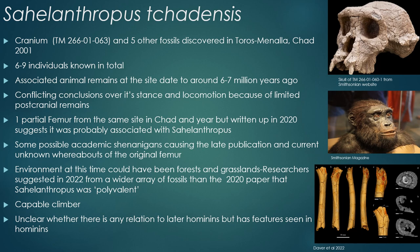Whether that was actually true I'm not sure, but things in archaeology do sometimes just not get published for years. We now have the femur and it has been well written about. Researchers in 2022 suggested that Sahelanthropus was polyvalent — it could probably walk both on the ground and was also arboreal, making it quite a capable climber. Its environment may have been forested with grassland. It's unclear whether there is any relation to later hominins, but there are certain physical features of Sahelanthropus's bones that do match later hominins.